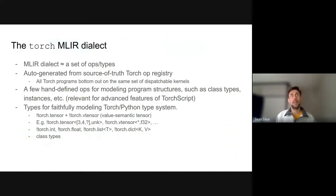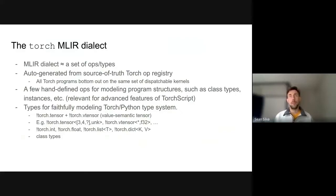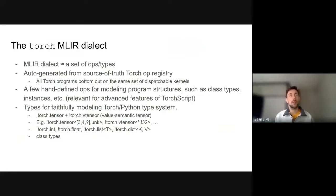Talking about the Torch MLIR dialect — for those not familiar, MLIR is a framework built around dialects, which is basically just a set of ops and types. One of the cool things about MLIR is you can have multiple dialects coexisting. The really cool thing about the Torch dialect is that we can auto-generate it entirely from Torch's op registry. We can generate all of the semantically load-bearing aspects of our IR directly. We can model the difference between a mutable tensor and a value-semantic tensor, unknown element types, unknown shapes, various lists, dictionaries, and even class types.